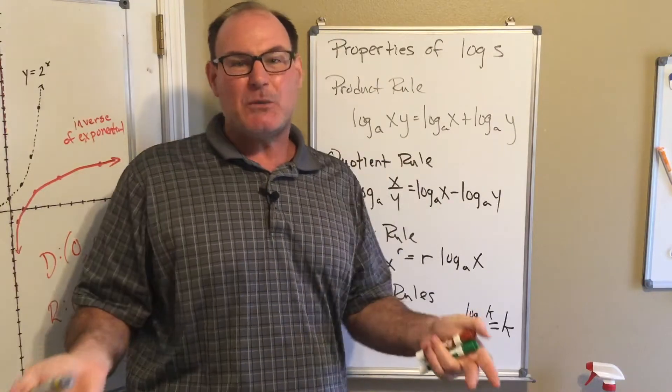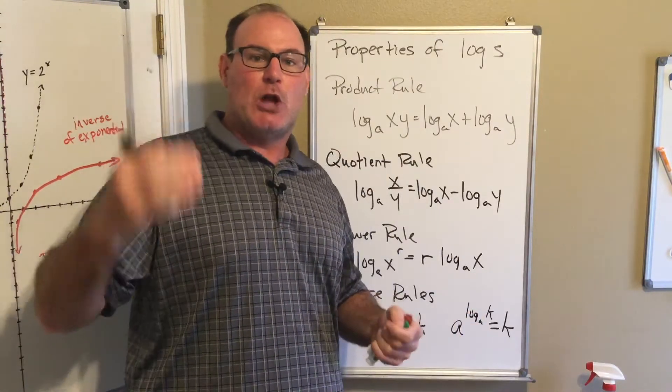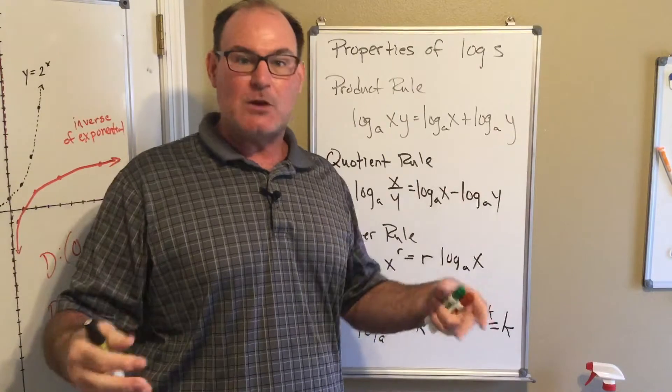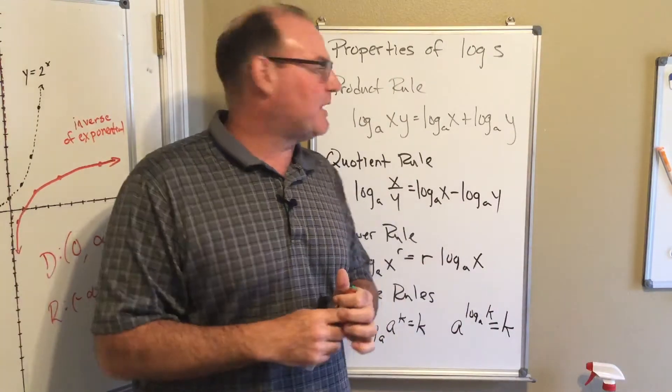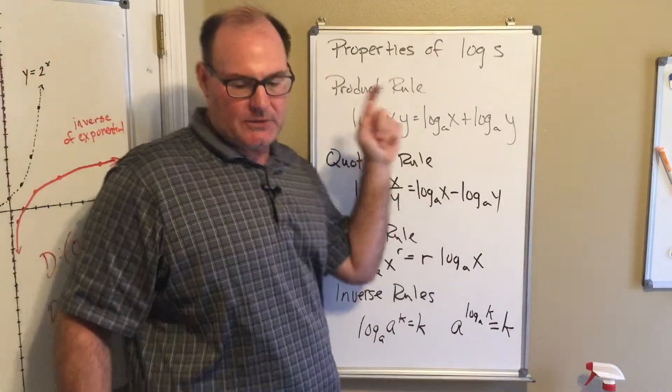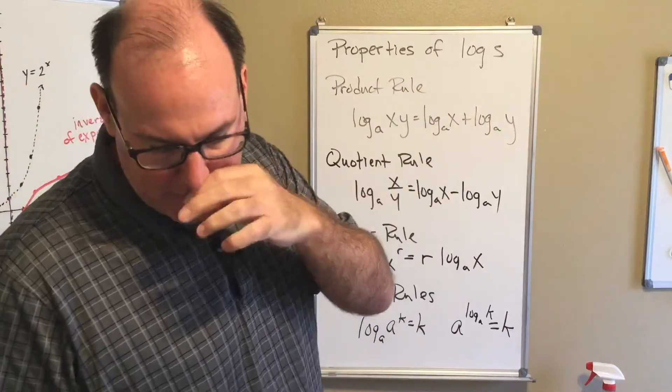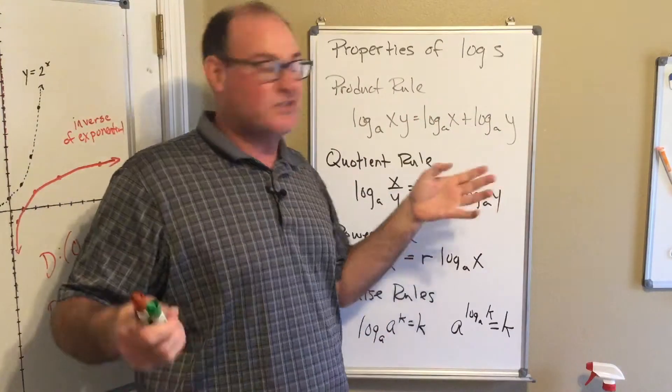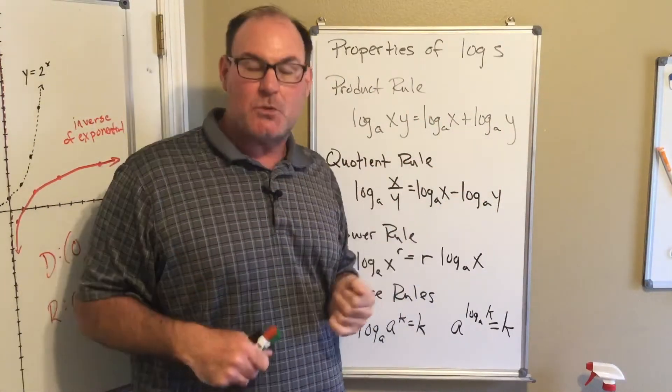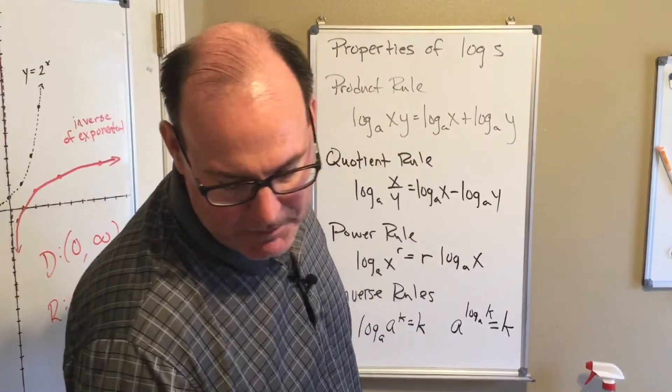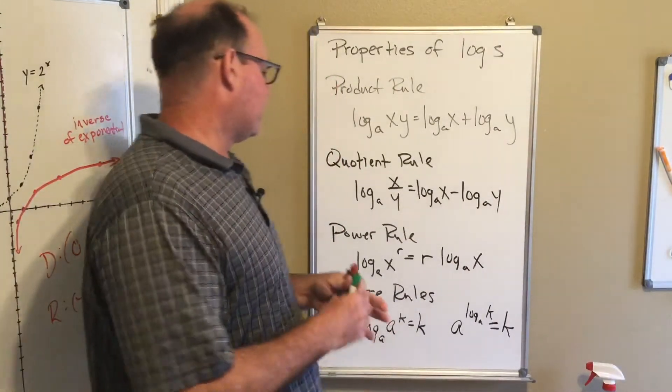Now remember, a nice way to remember these properties is the logarithm functions like the power. The logarithm equals the power of the exponential function. So these are the properties of logs. These are on page 405 of your book. So if you want to write them down or take a look at that, I'm sorry, not 405, I'm a page ahead - it's 403 of your book.